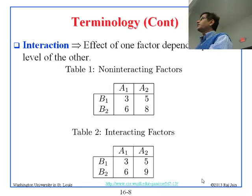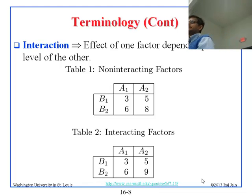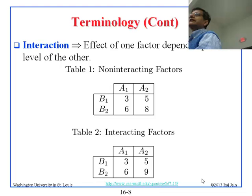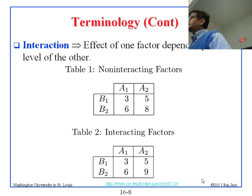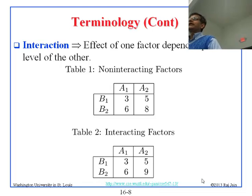However, if the results were 3, 5, 6, 9 — instead of 8 you have a 9 — you cannot make that same statement. When you go from A1 to A2, the effect is two if it is B1, but it is three if it is B2. Similarly, B changes performance by three if it is A1, but by four if it is A2. So you cannot make a statement about A without knowing the value of B, and vice versa. In this case, we say that A and B are interacting.